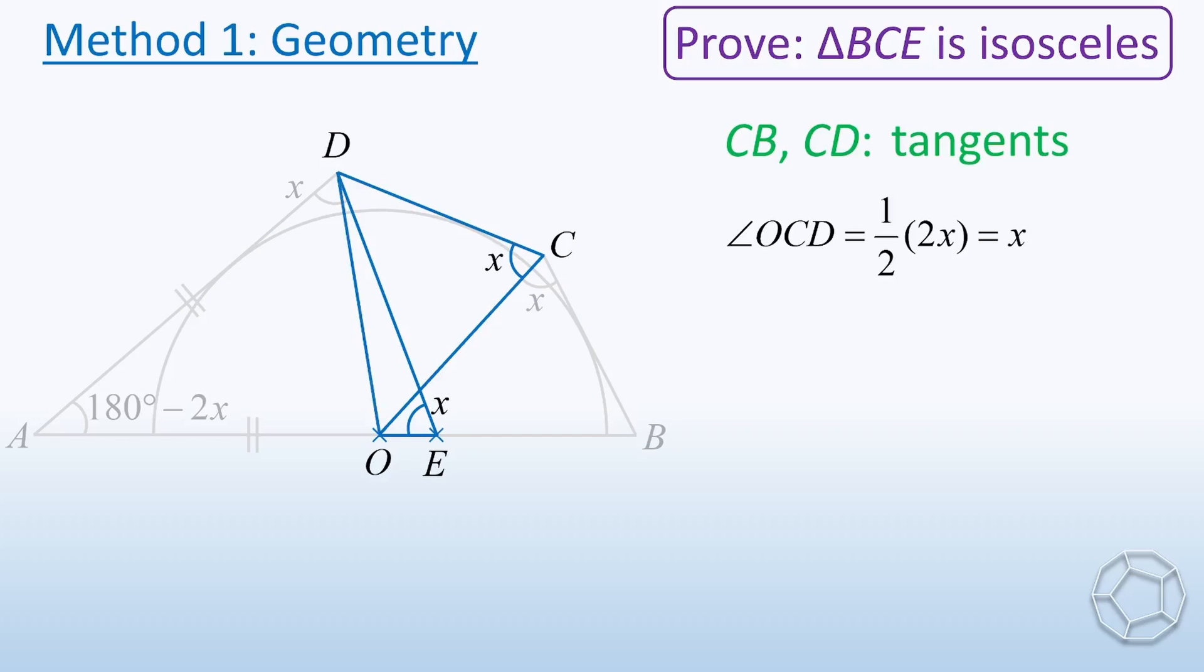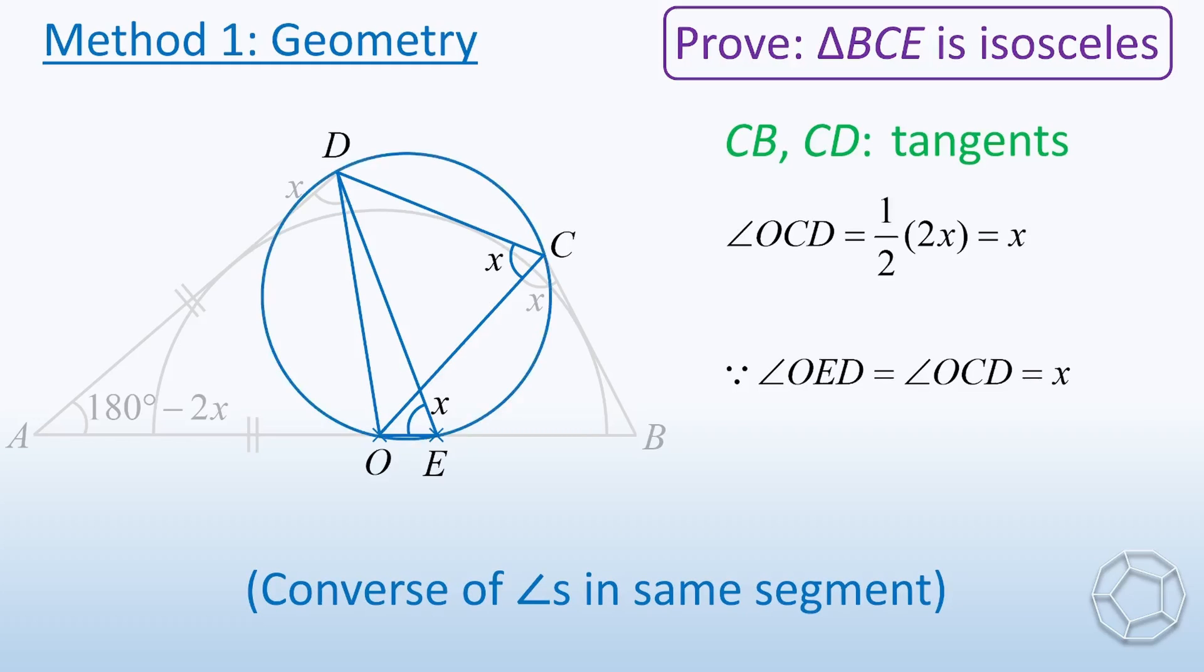Let's draw the side OD. Here, angle E and angle C are both equal to X. Using the converse of angles in the same segment, we can say that OECD is a cyclic quadrilateral.